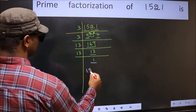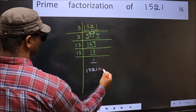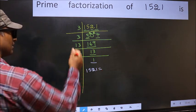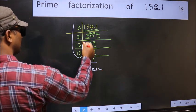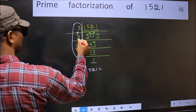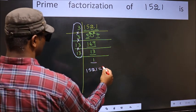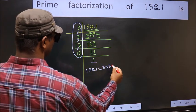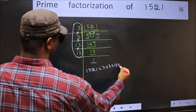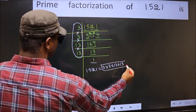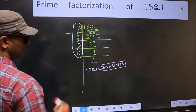So the prime factorization of 1521 is the product of these numbers: 3 into 3 into 13 into 13. This is the prime factorization of 1521.